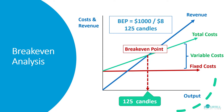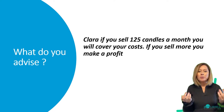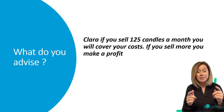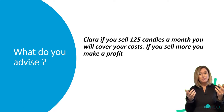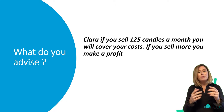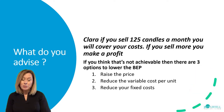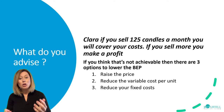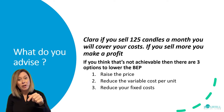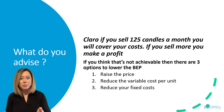So we can now give Clara some advice. Clara, if you sell 125 candles a month, you'll cover your costs. But if you sell more, you'll start making a profit. If you think that's not achievable, there are three options: number one, you can raise your prices; number two, you can reduce your variable cost per unit; and number three, you can reduce your overall fixed costs per month.